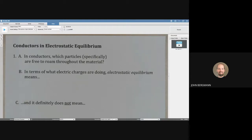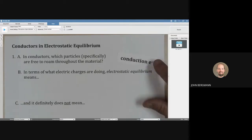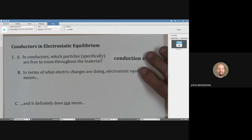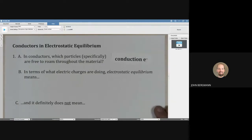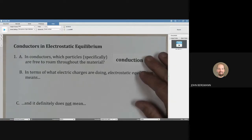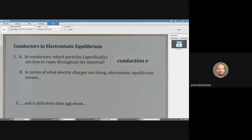In conductors, which particles specifically are free to roam throughout the material? That would be the conduction electrons, not all the electrons, only the ones in the outer energy levels, or even some of those. Definitely not core electrons. We're going to call those conduction electrons.